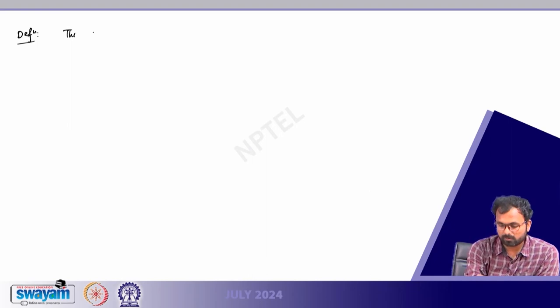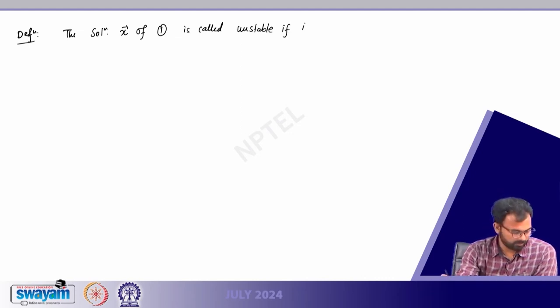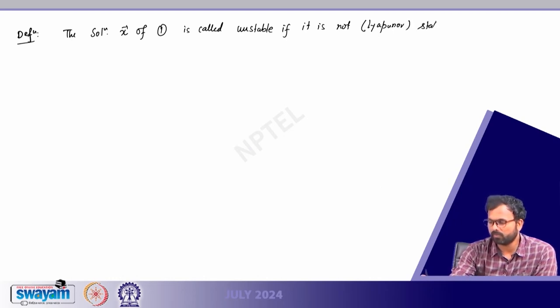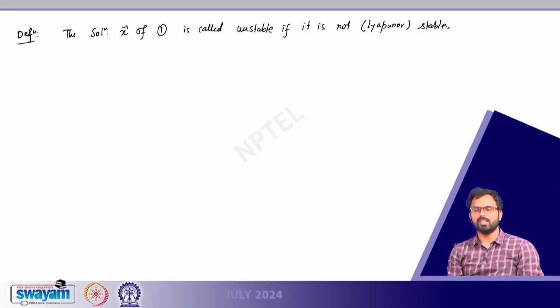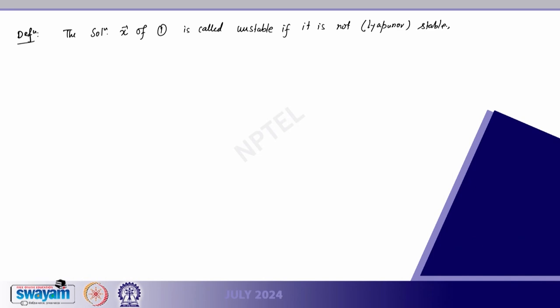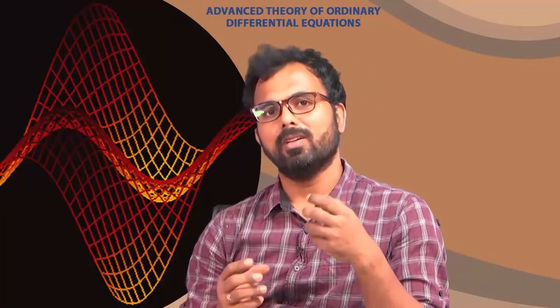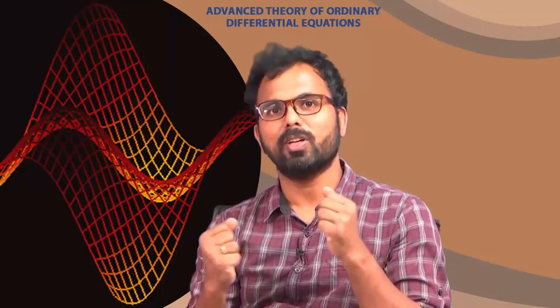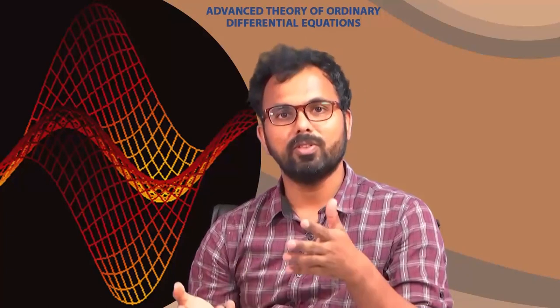Definition 4: The solution x of system 1 is called unstable if it is not Lyapunov stable. These are the definitions and terminologies I wanted to introduce. In the next class we will discuss some theorems and possibly one example to make these different terminologies concrete, and we will continue the discussion on stability. This is a very heavy chapter and I am trying to extract vital information for you. Please bear with me — there will be more definitions and results in upcoming classes. Thank you for your attention, I will see you in the next class.